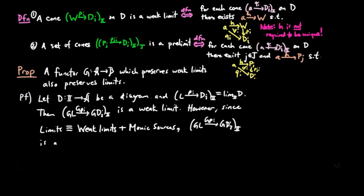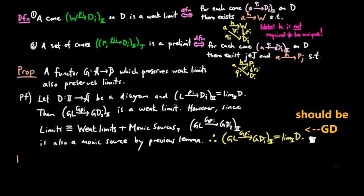GPI is also a monic source by the previous lemma. Therefore, GPI is a limit of GD. We can then also prove the following.